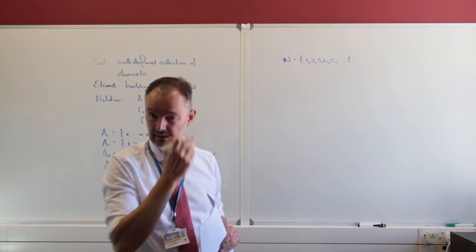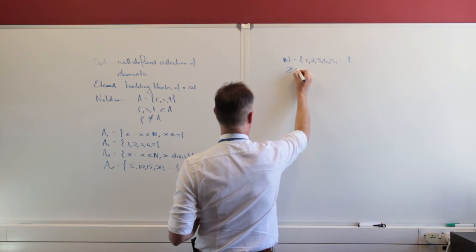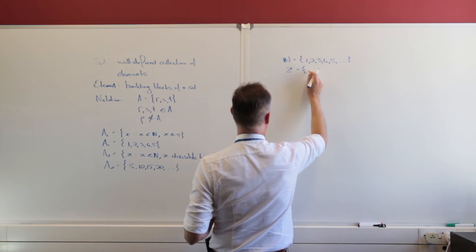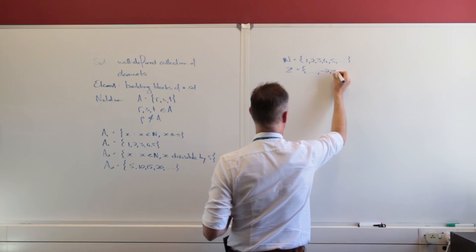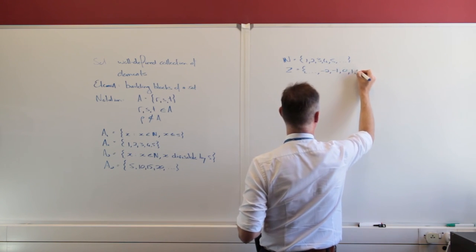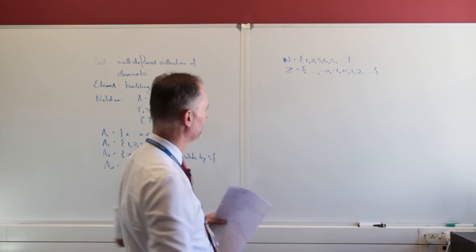So we start at the number 1 for natural numbers. Of course that means we must have the integers, double stroke Z. And that is just going to go from negative infinity, say negative 2, negative 1, 0, 1, 2, all the way to positive infinity.